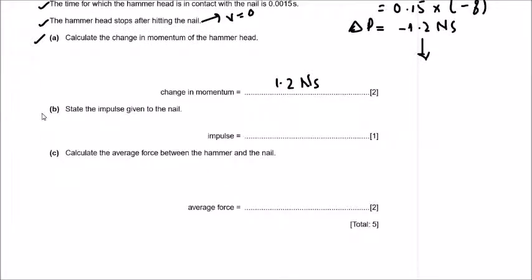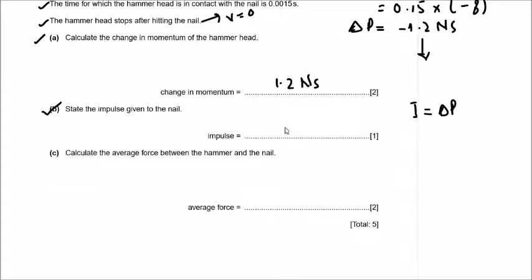Part b: state the impulse given to the nail. Impulse equals change in momentum, and in part a we calculated the change in momentum as 1.2 Newton-seconds. So without any further calculation, the impulse is also 1.2 Newton-seconds.